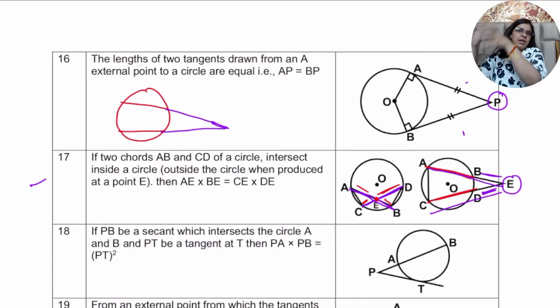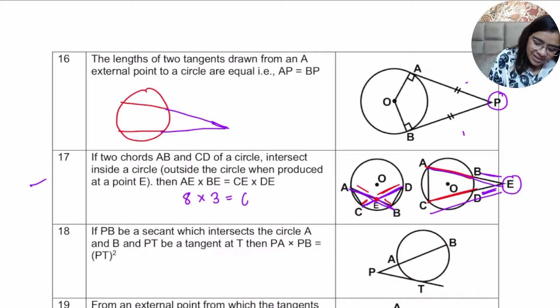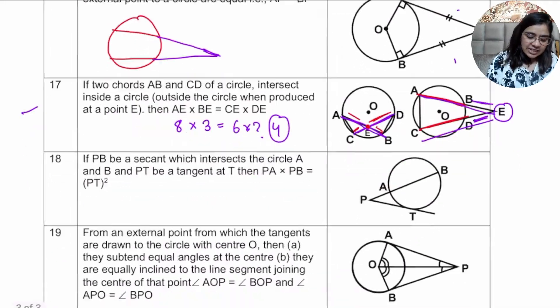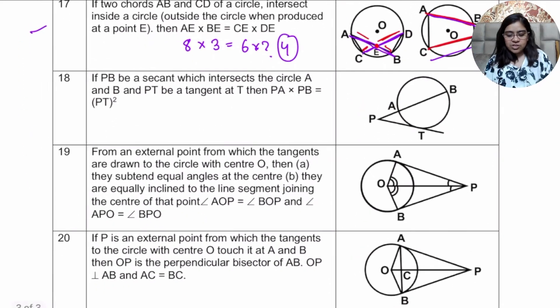So according to the formula, the length of AE, that is the entire length multiplied with the exterior part, will be equals to the product of the entire length of CE multiplied with the exterior part. That's how it goes about. And this will be helpful in the questions because sometimes the length of one part will be given and the other part will not be given. So you have to find out the value of DE. Well, here you can directly say that if 8 into 3 is 24, I'll divide 24 by 6 and get the value of DE as 4, right? That's how you will use it in the exams or in your questions directly.